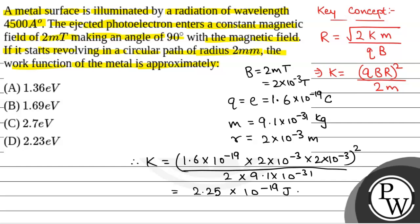On solving this, we get the kinetic energy as 2.25 into 10 to the power minus 19 joules. To convert this to electron volts, we divide by 1.6 into 10 to the power minus 19. This gives kinetic energy equal to 1.40 electron volt.